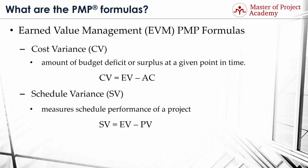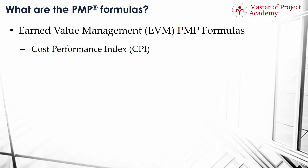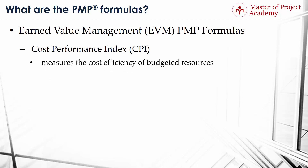PMP formula number 5: Cost Performance Index or CPI. One of the most common PMP formulas for control cost is CPI. It measures the cost efficiency of budgeted resources, expressed as a ratio of earned value to actual cost. Accordingly, its formula is: CPI equals EV divided by AC.